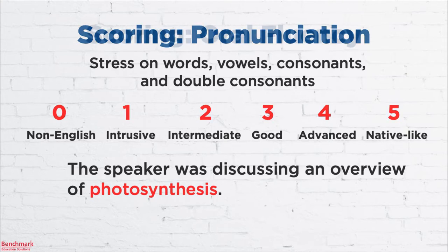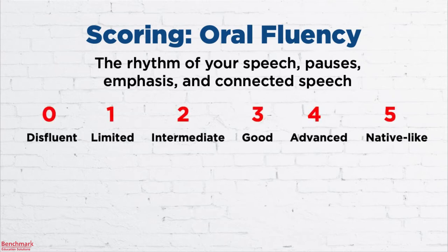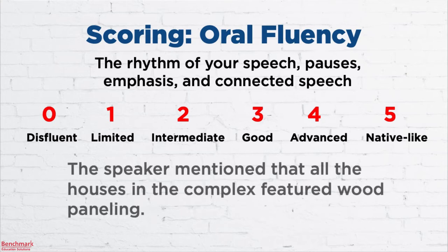The last part of the scoring involves your oral fluency — the rhythm of your speech, including pauses, emphasis, and connected speech. It also ranges from 0 to 5, with 0 being disfluent and 5 being native-like. For example: 'The speaker mentioned that all houses in the complex featured wood paneling.' If you were to stop and start or restart mid-sentence, points would be deducted. This is why it's very important to just keep speaking once you start and don't pause for more than 3 seconds, because the microphone will stop recording if you do.